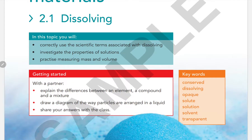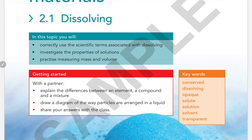First, let's explain the difference between an element, a compound, and a mixture. An element is a substance which contains just one type of atom. A compound is formed when two or more different elements combine together chemically.